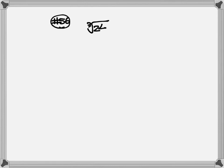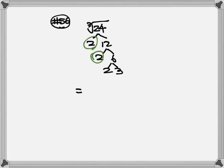Number 56: we have cube root of 24. The little 3 outside tells us we're looking for three numbers that are the same. Breaking down 24: 2×12, 2×6, 2×3. The little 3 outside tells us we're looking for three identical numbers. Here's one, two, three — three 2s — so one 2 goes out, and 3 stays inside. Don't forget that little 3; it's very important.